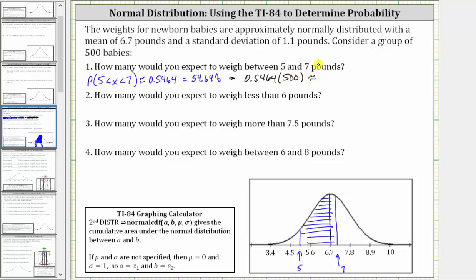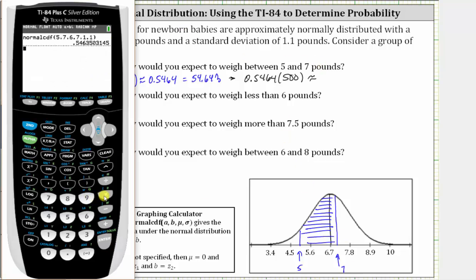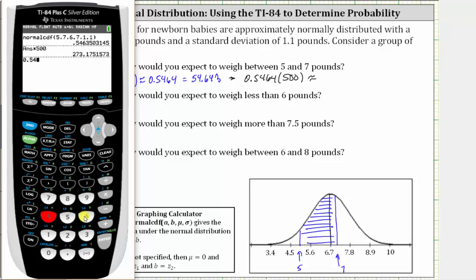We'll round to the nearest baby. Going back to the calculator, we could press times 500, which will multiply the previous result by 500. Or we can enter the approximation of 0.5464 times 500. To the nearest baby, we get the same result of approximately 273 babies.